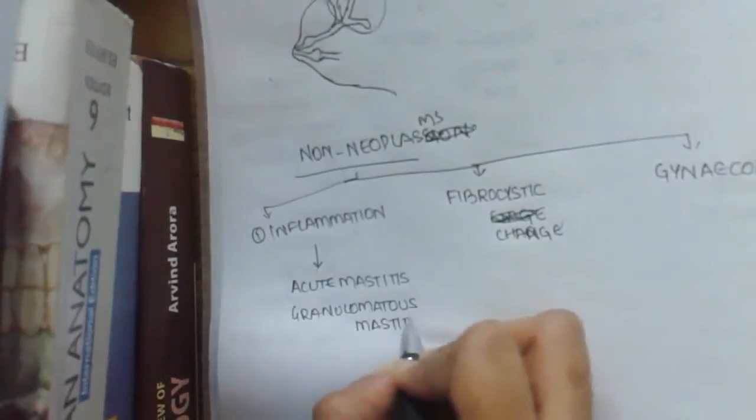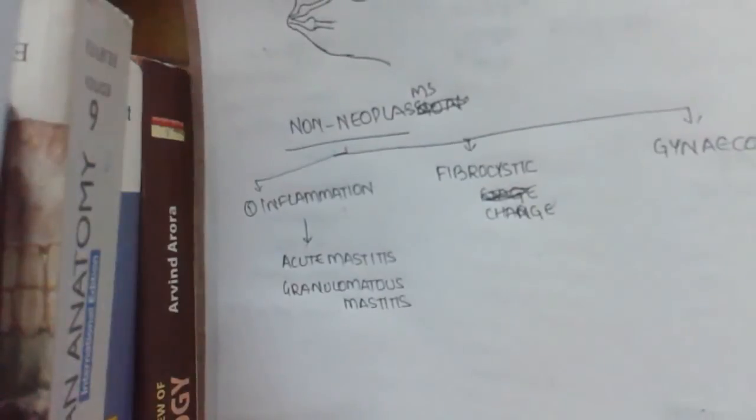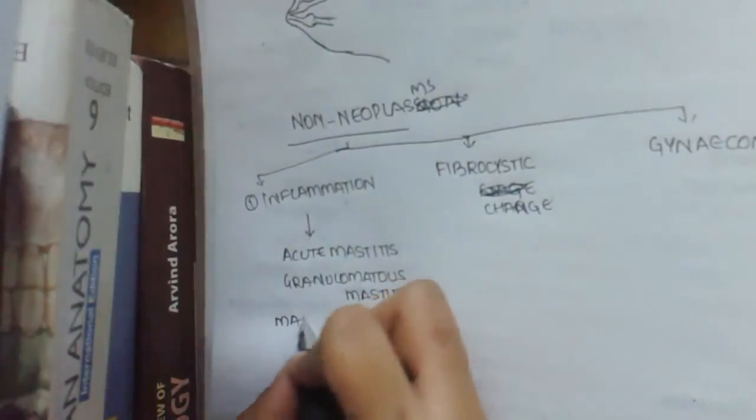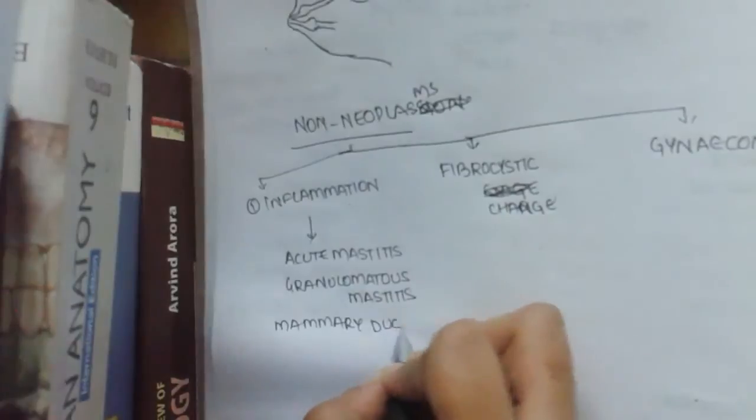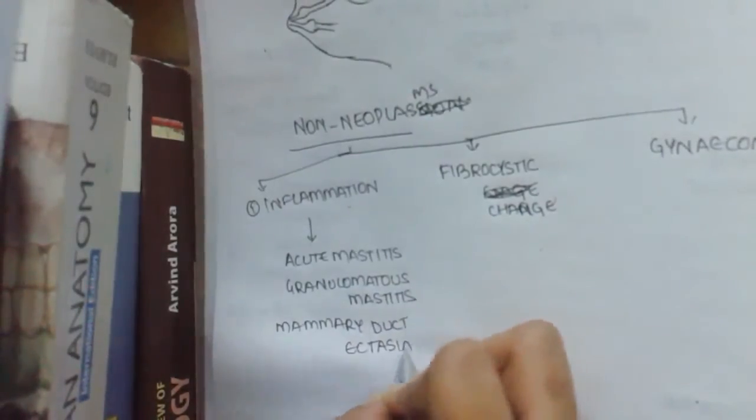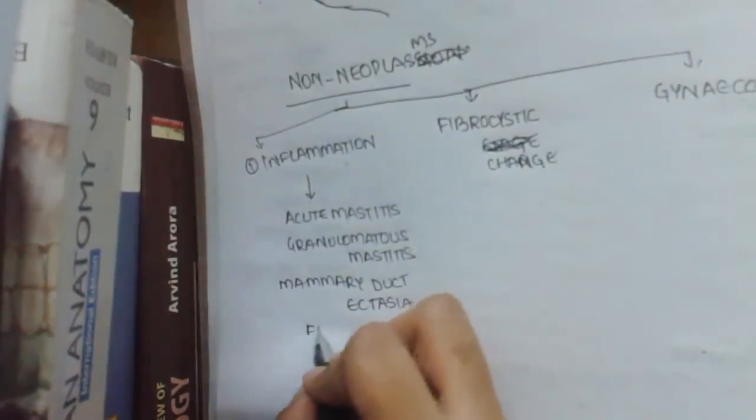Before I deal with each and every chapter in pathology, I'll write an outline chart which you all have to remember for sure, because that is what makes you learn pathology. Other types include mammary duct ectasia and fat necrosis, because breast contains a lot of adipose tissue that may undergo necrosis, and galactocele.